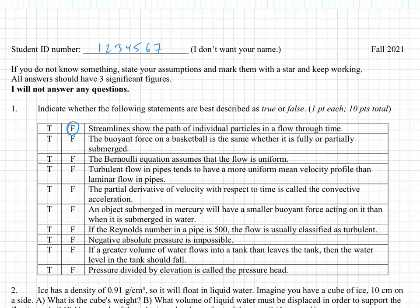The buoyant force on a basketball is the same whether it's fully or partially submerged. The buoyant force is the gamma of the fluid times the volume displaced. So if the ball is underwater versus not all the way underwater, the volume displaced is going to change. So clearly this is false.